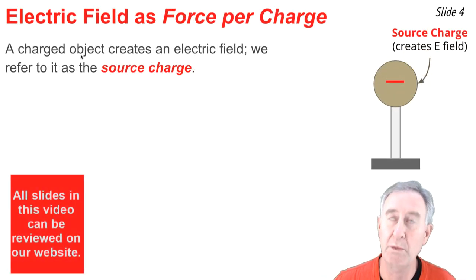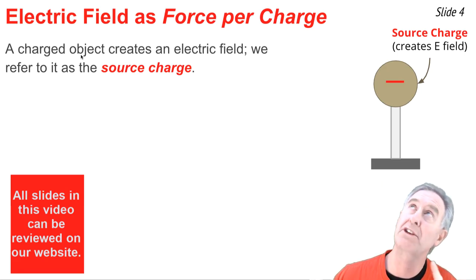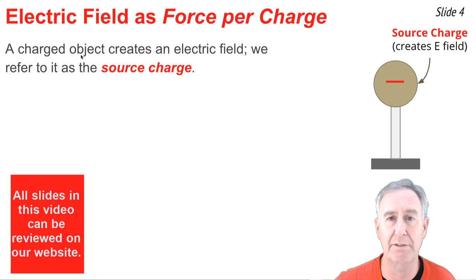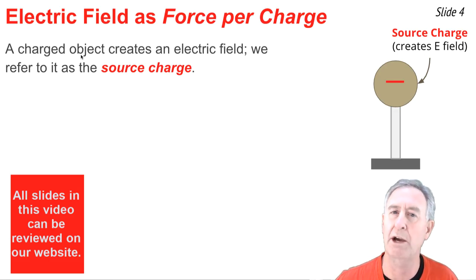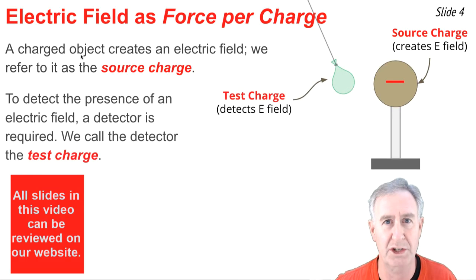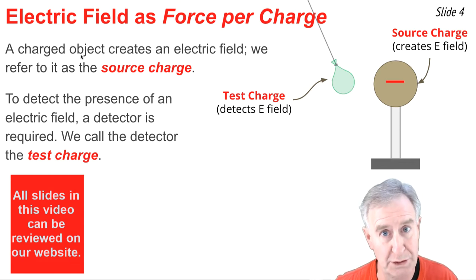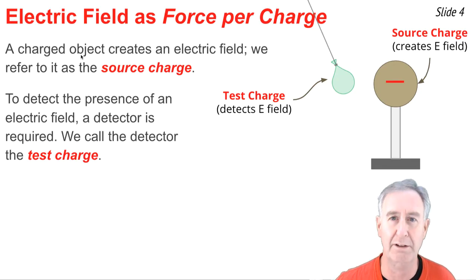Suppose we have a negatively charged Vandegraaff generator creating an electric field — we call this the source charge, the object creating the electric field. To detect this electric field, we need some sort of detector, usually a charged object called the test charge. It could be, for instance, a negatively charged balloon that responds to the force of the source. We call this balloon the test charge — it's detecting the electric field.